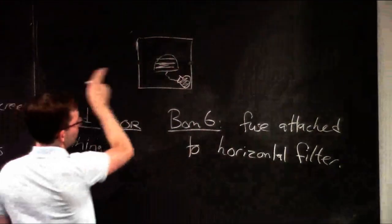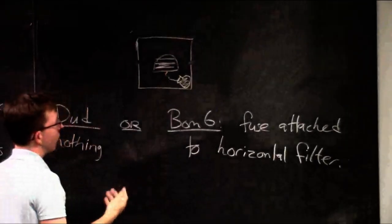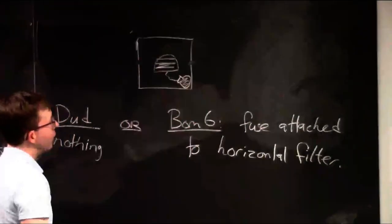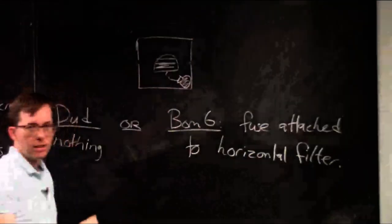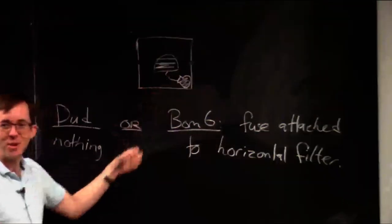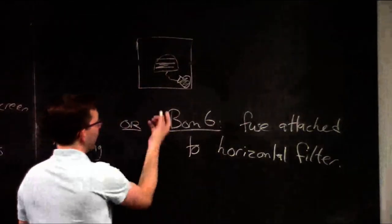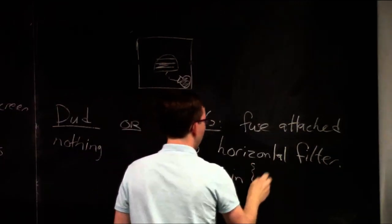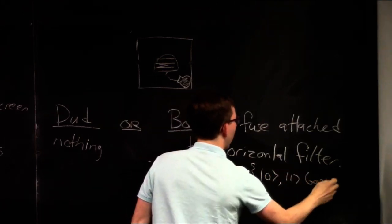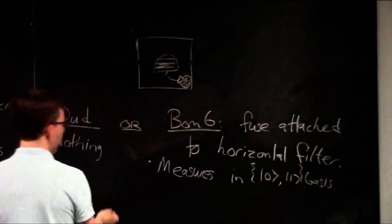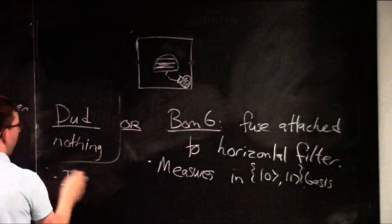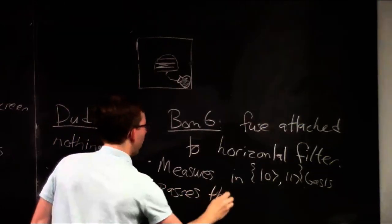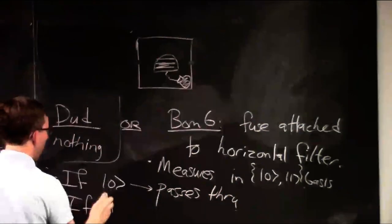In the bad case, there's a horizontal polarizing filter and a fuse attached to a bomb. When the photon comes in, it measures in the standard basis. If it's zero — horizontal — the photon just flies through as normal. If it's one, the photon doesn't come through, generates a little heat, and that heat is enough to light the fuse and the bomb explodes. So basically, the box in this case measures in the standard basis: if zero, it passes through; if one, it explodes.